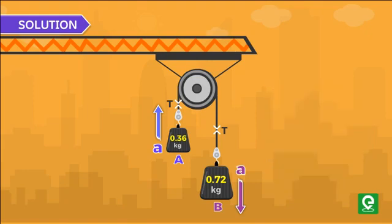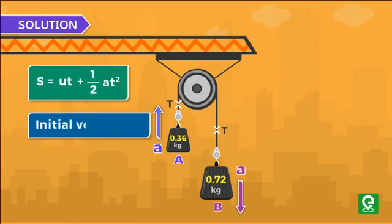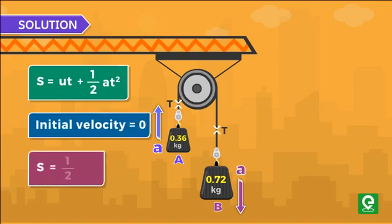Now we can find the displacement of block by using the second equation of motion, which is s equal to ut plus half at squared. Since the system is released from rest, therefore initial velocity u is 0. Hence our equation becomes s equal to half at squared.